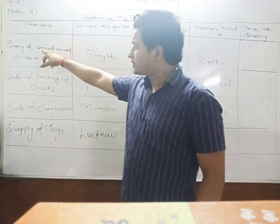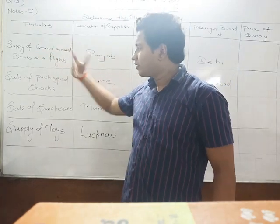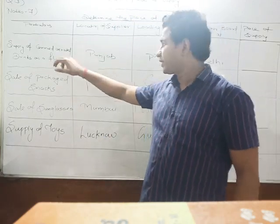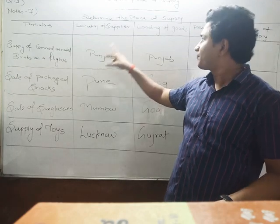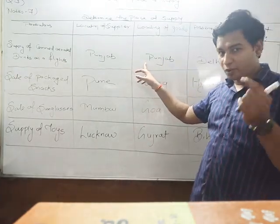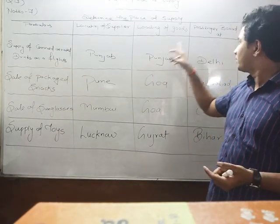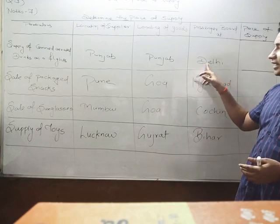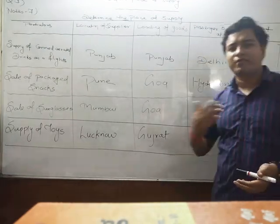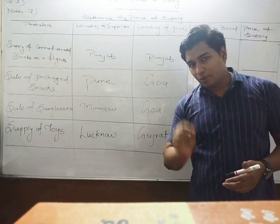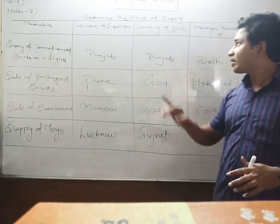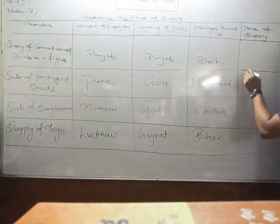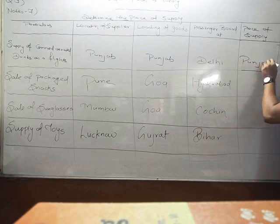For the supply of aerated drinks on a flight, we are serving soft drinks — those are the particular goods. The supplier is from Lisov; loading of goods happens at a particular point. It doesn't matter where the passengers are coming from — we are only concerned about where the goods are loaded. So Punjab is the place of supply.